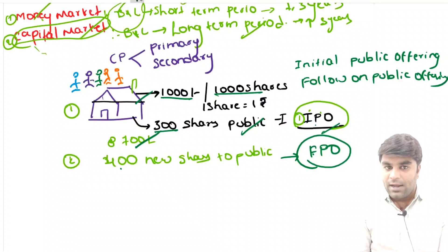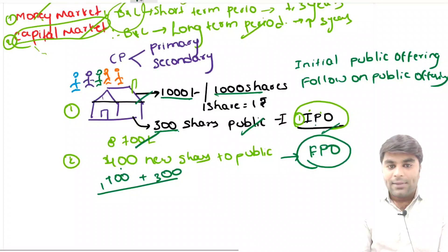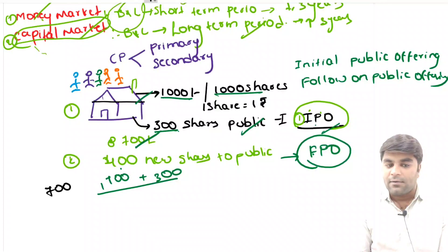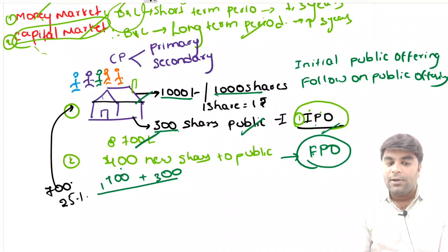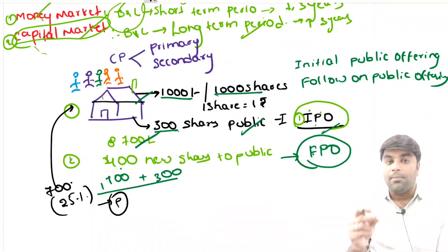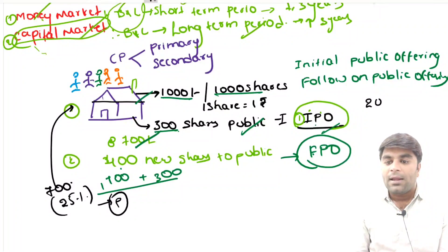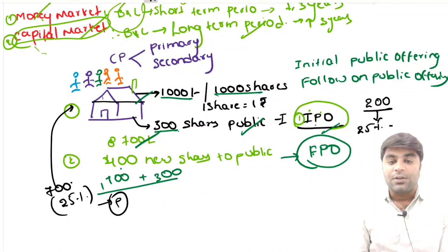Currently the owners have 700 shares. SEBI says that at least a company should hold 25% of their shares with the public. This is the minimum public shareholding requirement. According to SEBI guidelines, any top 200 companies by market capitalization need to maintain at least 25% of the shares — 25% of the ownership — with the public.